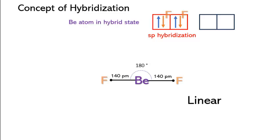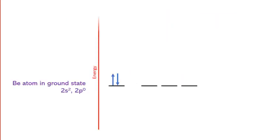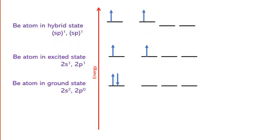Let us also briefly discuss the energy changes during this process. In the ground state, beryllium has its electrons in the 2s orbital. Upon excitation, one electron is promoted to the 2p orbital, raising the energy level. When hybridization occurs, the energy levels of the 2s and 2px orbitals mix to form the sp hybrid orbitals, which are at higher energy.